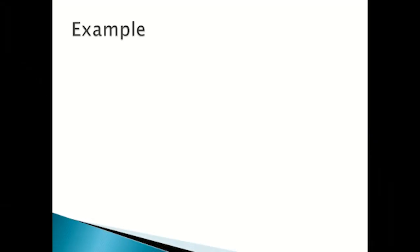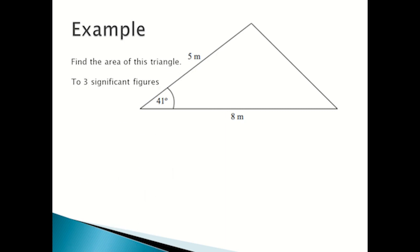An example question. Find the area of this triangle to three significant figures. First you state your formula, which is a half a b sine c. Next you substitute in the values, so you'll be a half times 5 times 8 times sine 41.